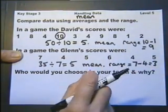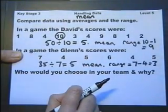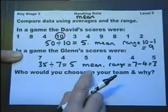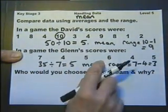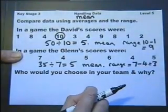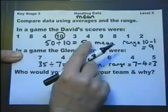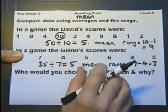So in this particular case, their means are the same, so there's no way to choose between them there. But if we want a consistent player, we choose Glenn because his range is smaller and his results are tighter packed. But there again, if it's an extremely important game that we must win, we might gamble on David because on the odd occasion he scores very well. So there's several arguments here.